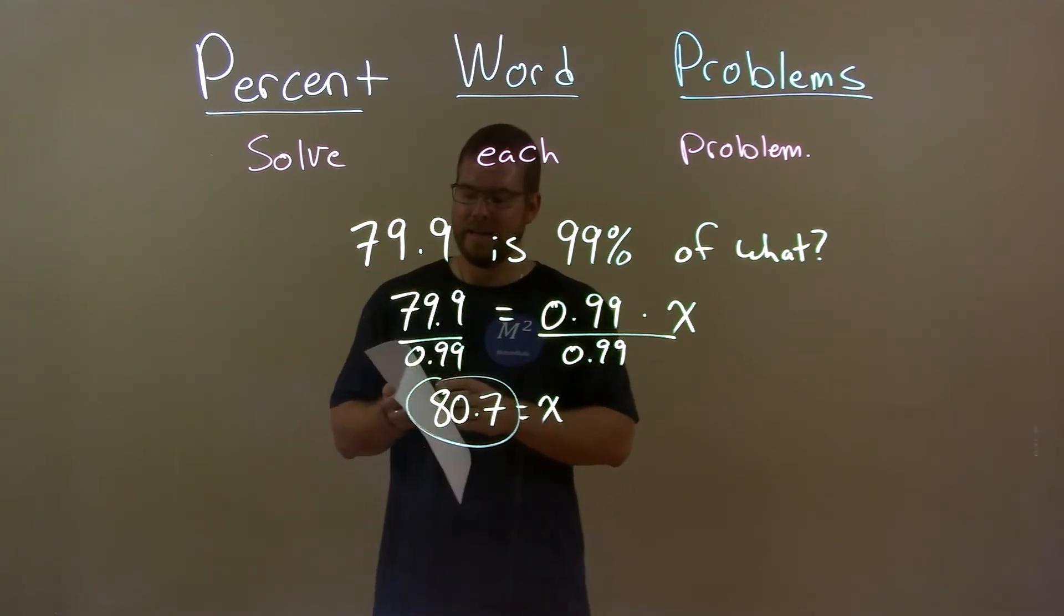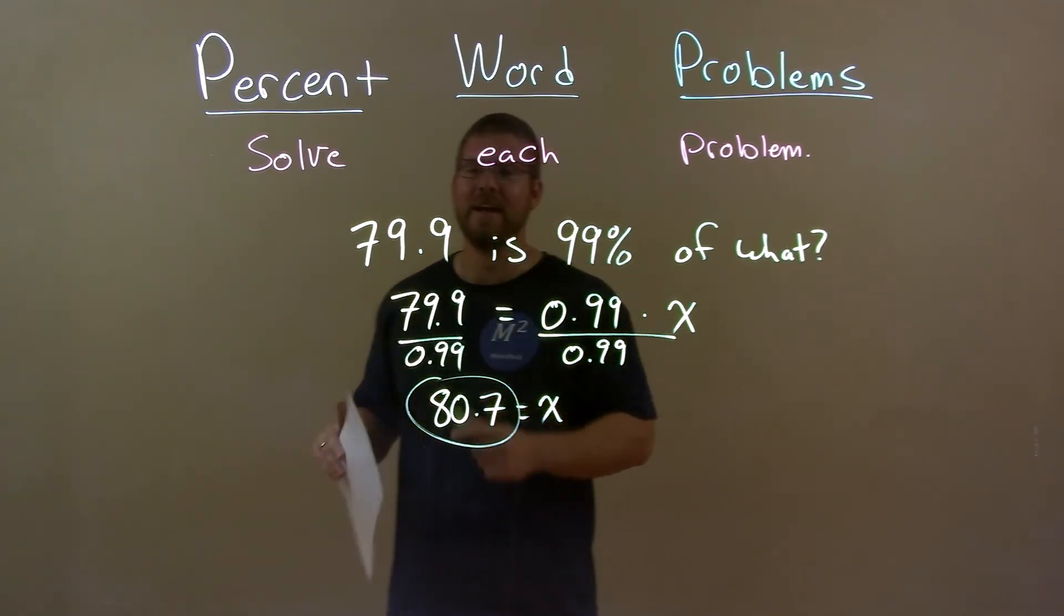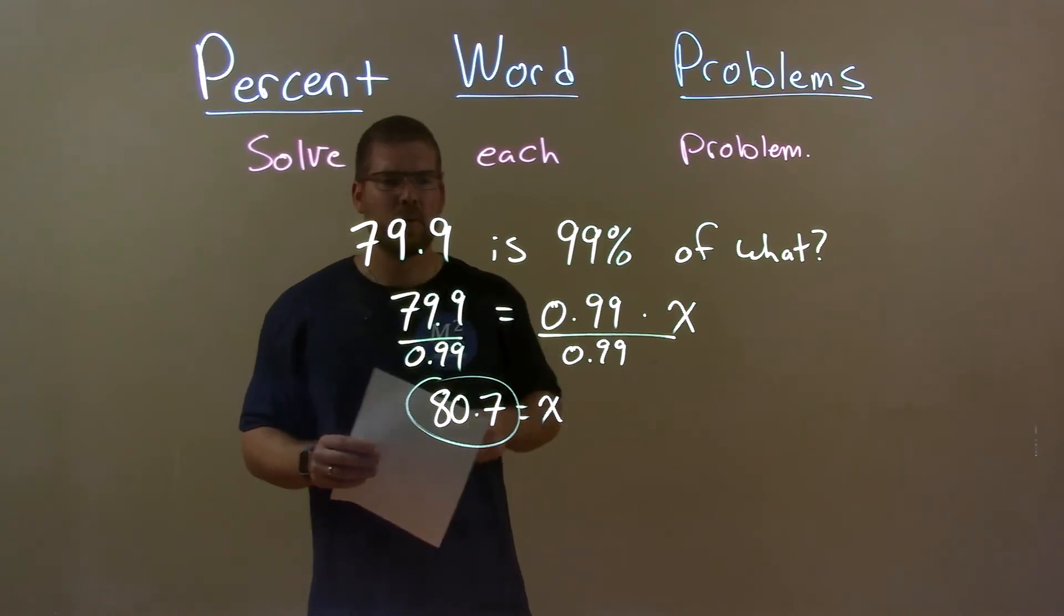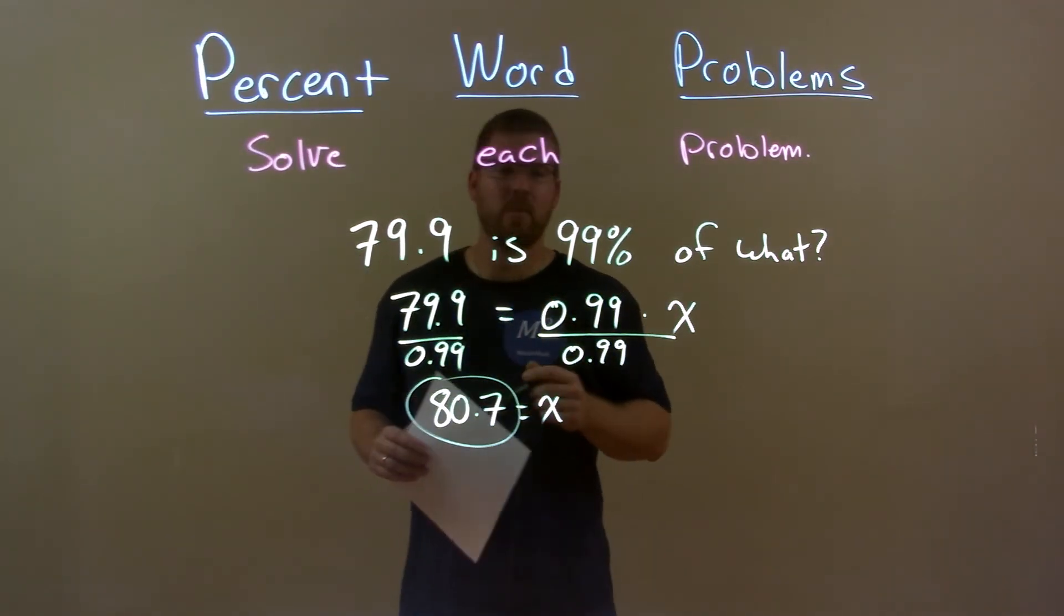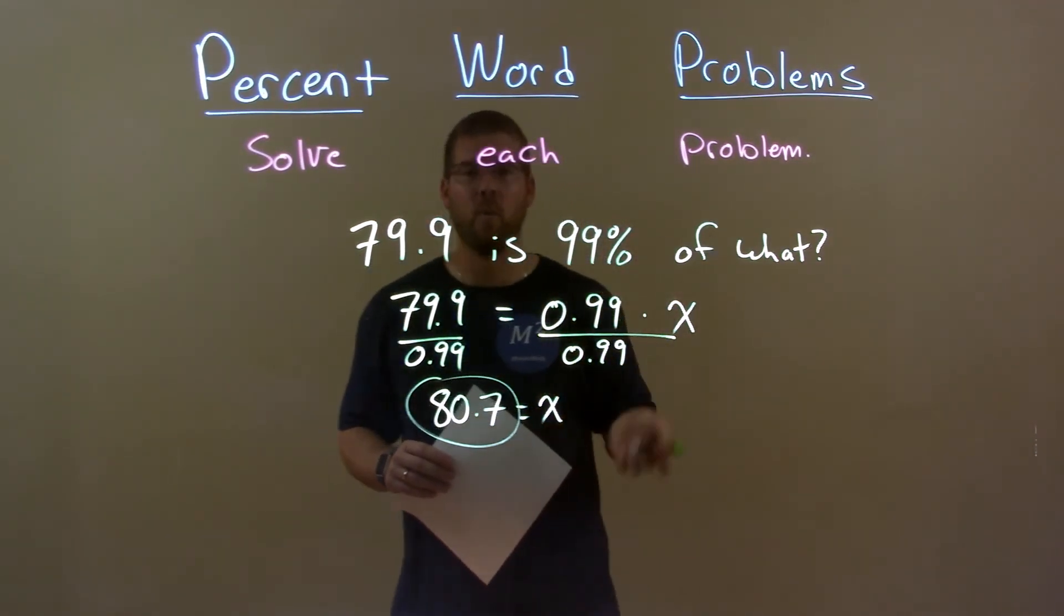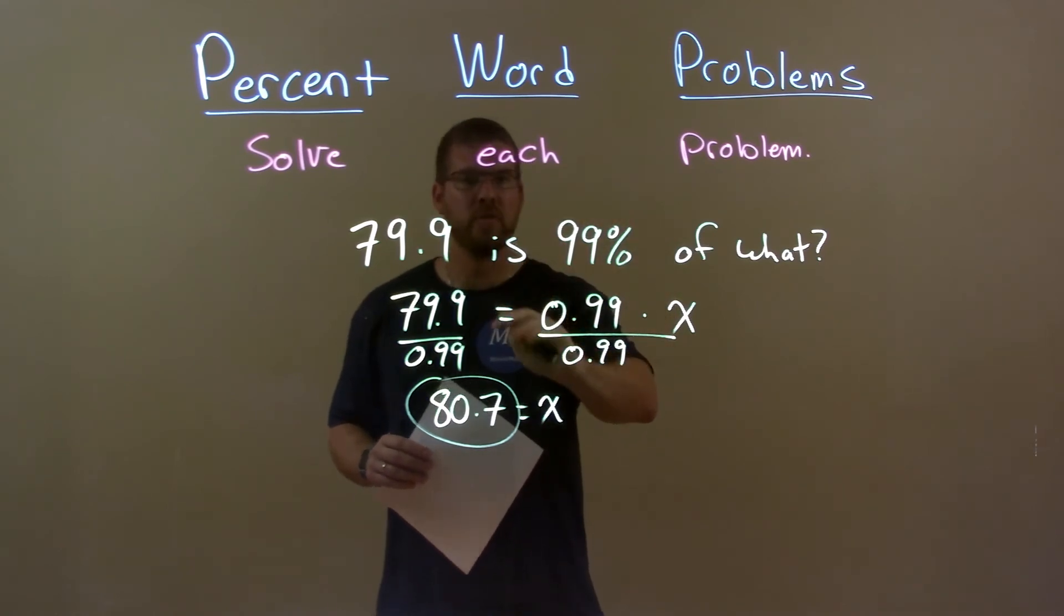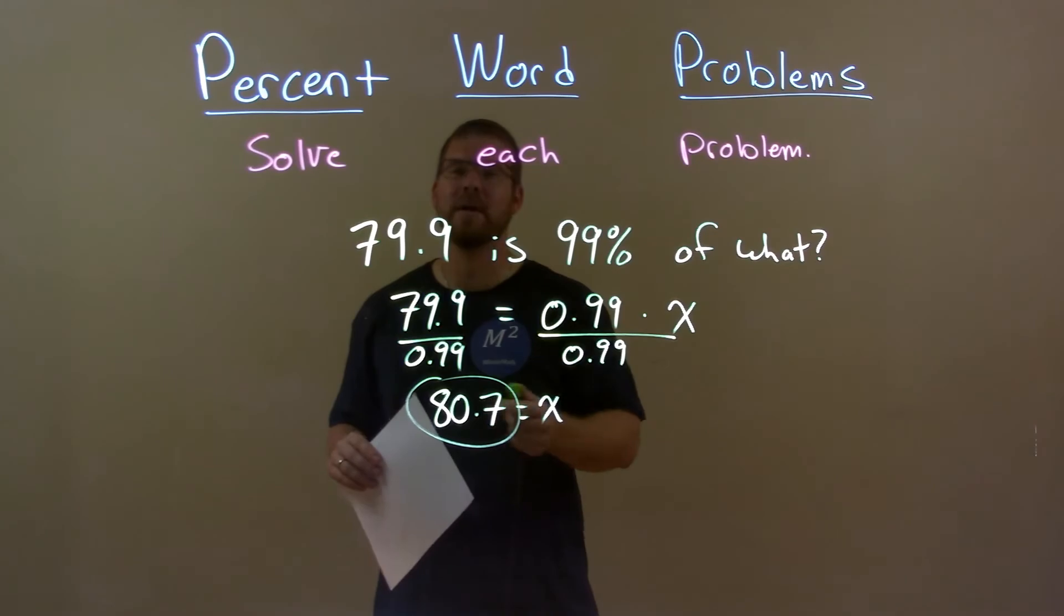79.9 is 99% of 80.7. So, a quick recap. We're given 79.9 is 99% of what? I wrote that as an equation, then I solved for x and got my answer which is 80.7.